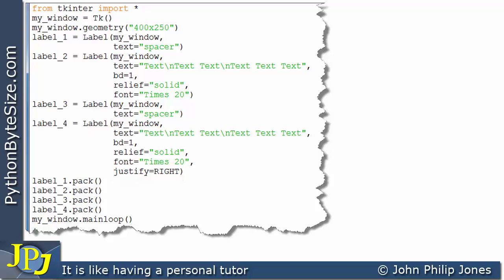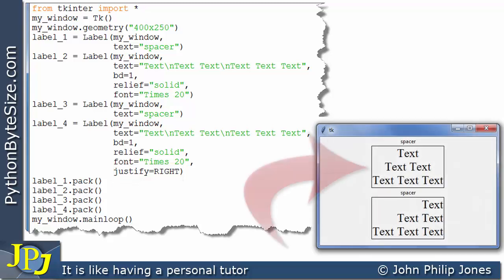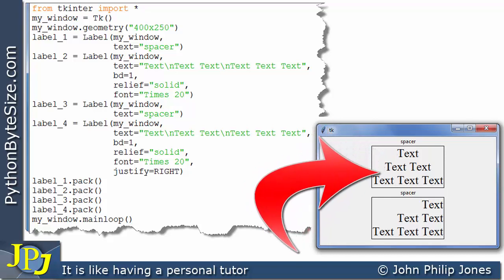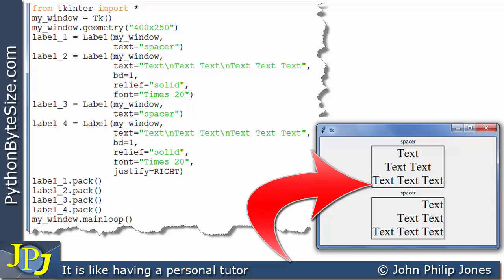If I run this program, this is what we're going to see. We can see that this is label 2. We've got text on one line, text text on the second line, and three lots of text on the third line.